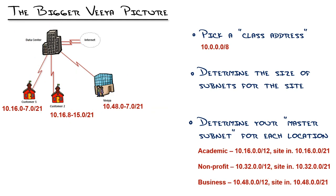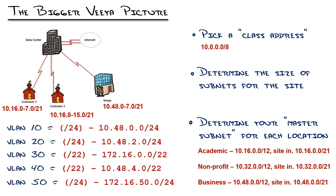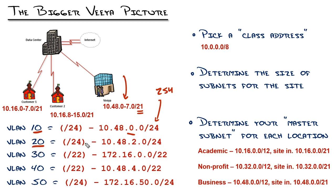So now I want to take that individual master subnet for the site — VIA specifically — and apply it to the individual VLANs. VLAN 10, which was the server and static subnet, is going to use a /24. We already determined that size, and it'll get the first subnet from the group: 10.48.0.0/24. So we've broken that /21 into yet another level, applying it to the VLAN directly. VLAN 20, which is our voice subnet, will be 10.48.2.0/24. That'll handle our IP phones for the location.